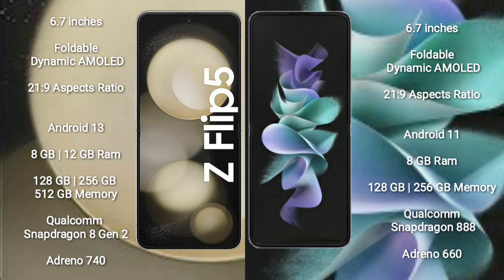Samsung Galaxy Z Flip 5 comes with 8GB or 12GB RAM and 128GB, 256GB, or 512GB internal storage, with a Qualcomm Snapdragon 8 Gen 2 Plus processor and GPU Adreno 740. Samsung Galaxy Z Flip 3 comes with 8GB RAM and 128GB or 256GB internal storage, with a Qualcomm Snapdragon 888 processor and GPU Adreno 660.